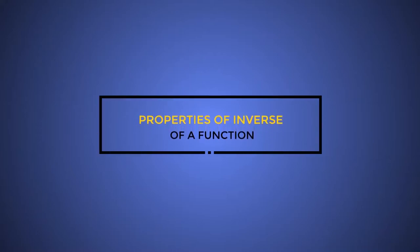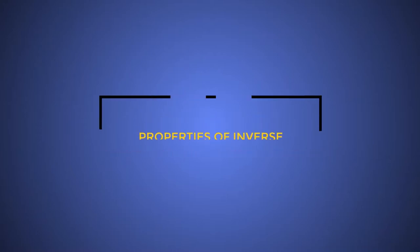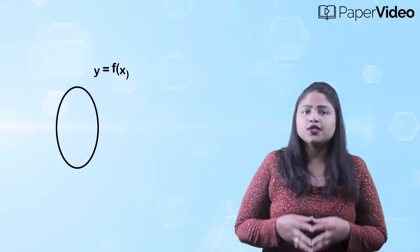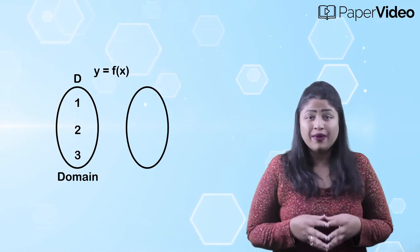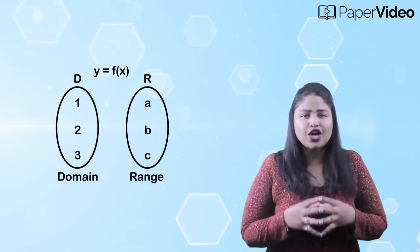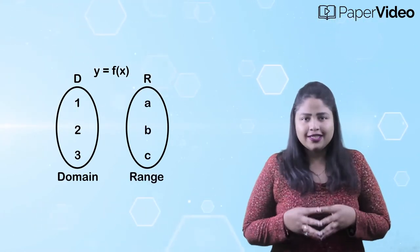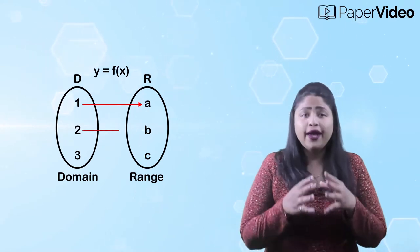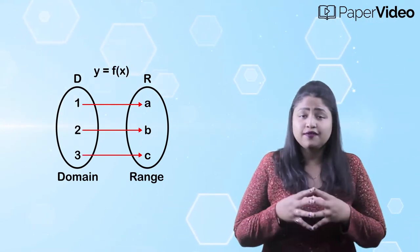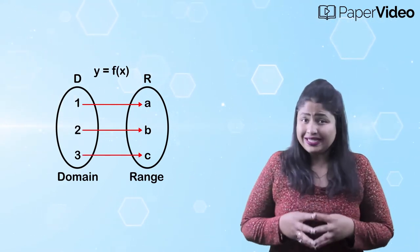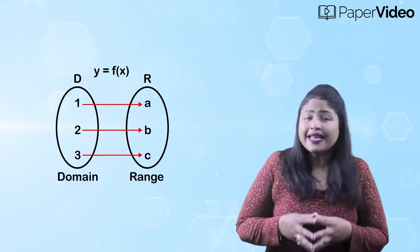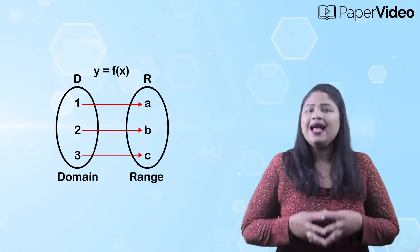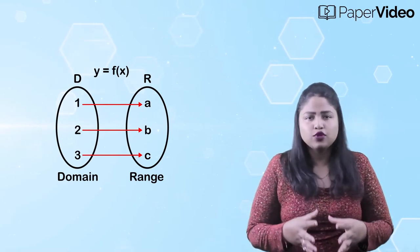Properties of Inverse of a Function. Suppose y equals f of x is a function defined on a domain D and has a range R. Then by the definition of function, for every value of independent variable x in the domain D, there exists a certain value of dependent variable y in the range R.